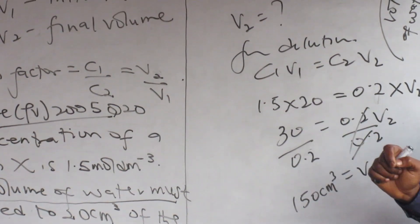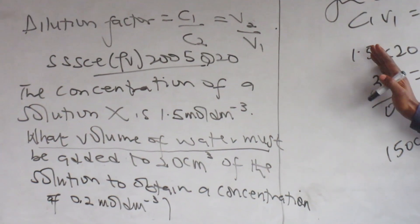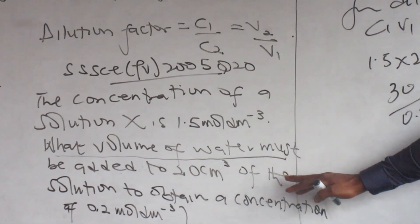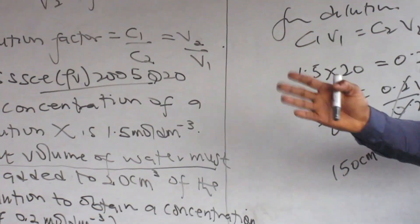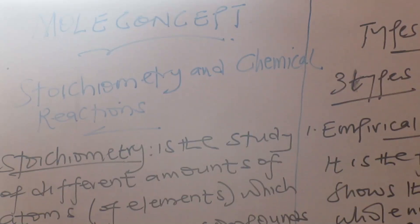From dilution, C1V1 equals C2V2. Now, C1 is 1.5, V1 is 20. You can decide to change or not to change. We are using a cm³ volumetric container, so don't worry. Any other concentration available, you have to change the volume. C2 is 0.2 and V2 we don't know.